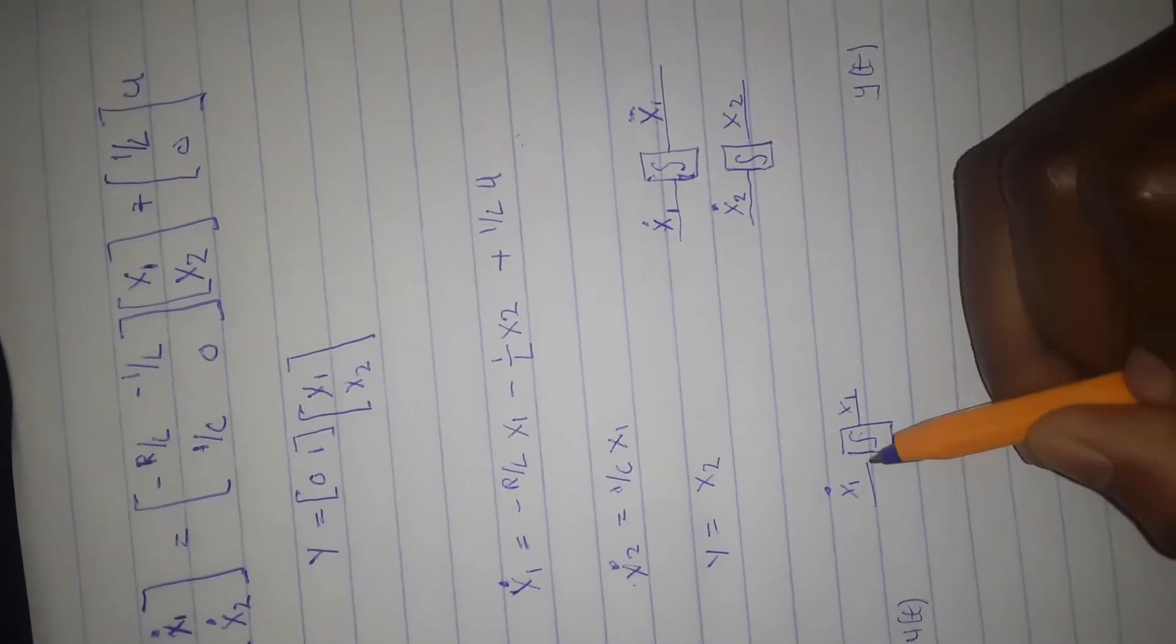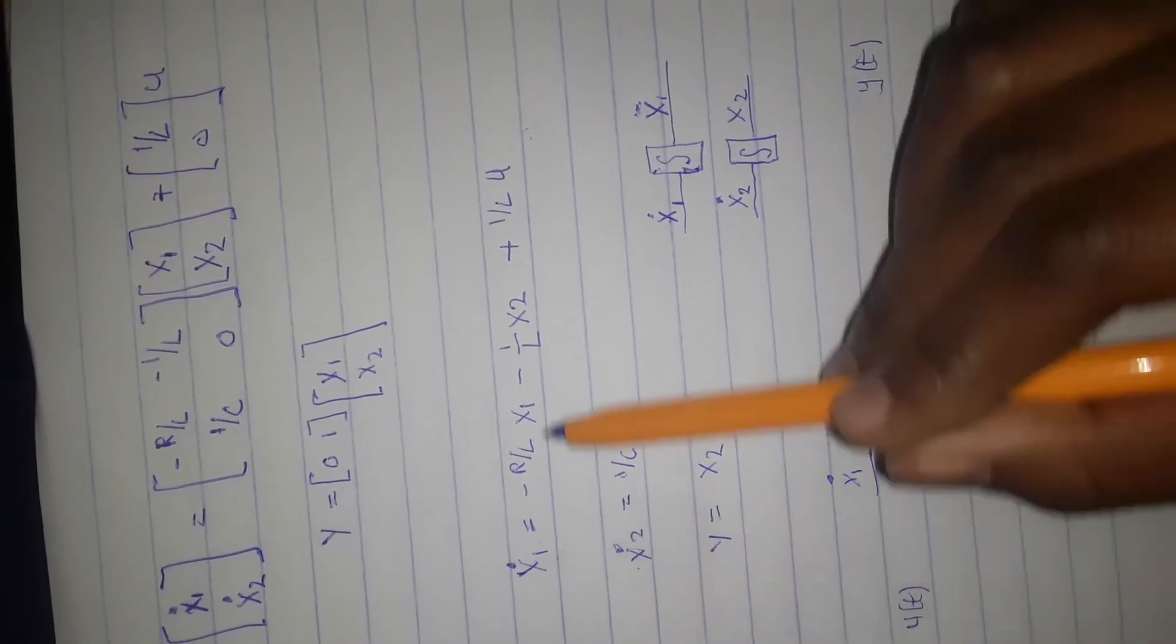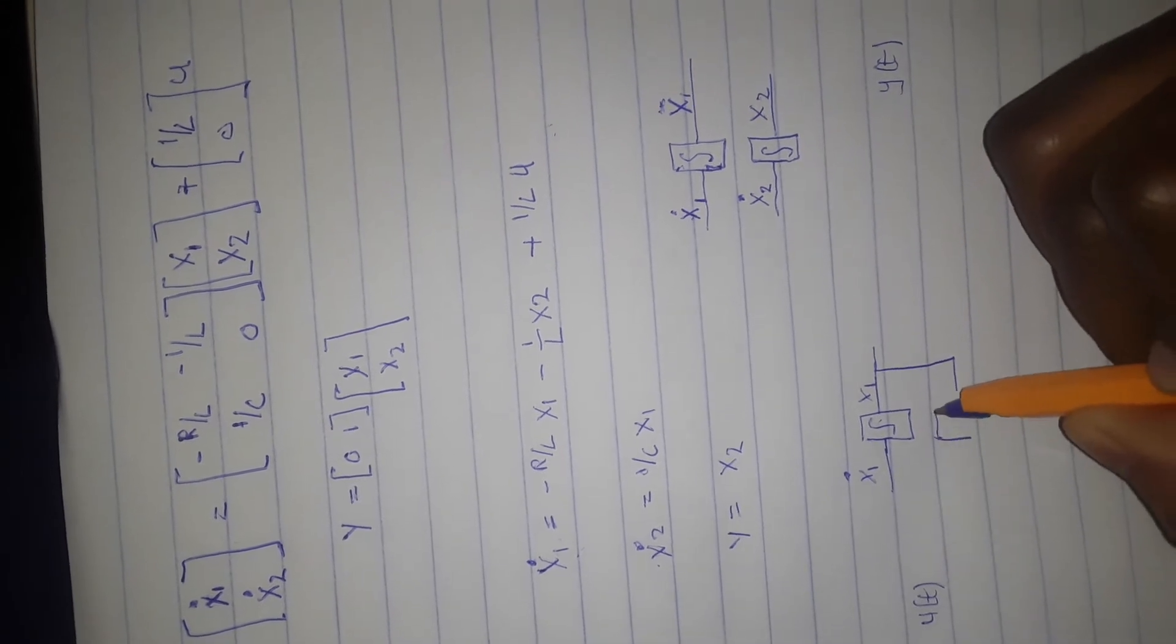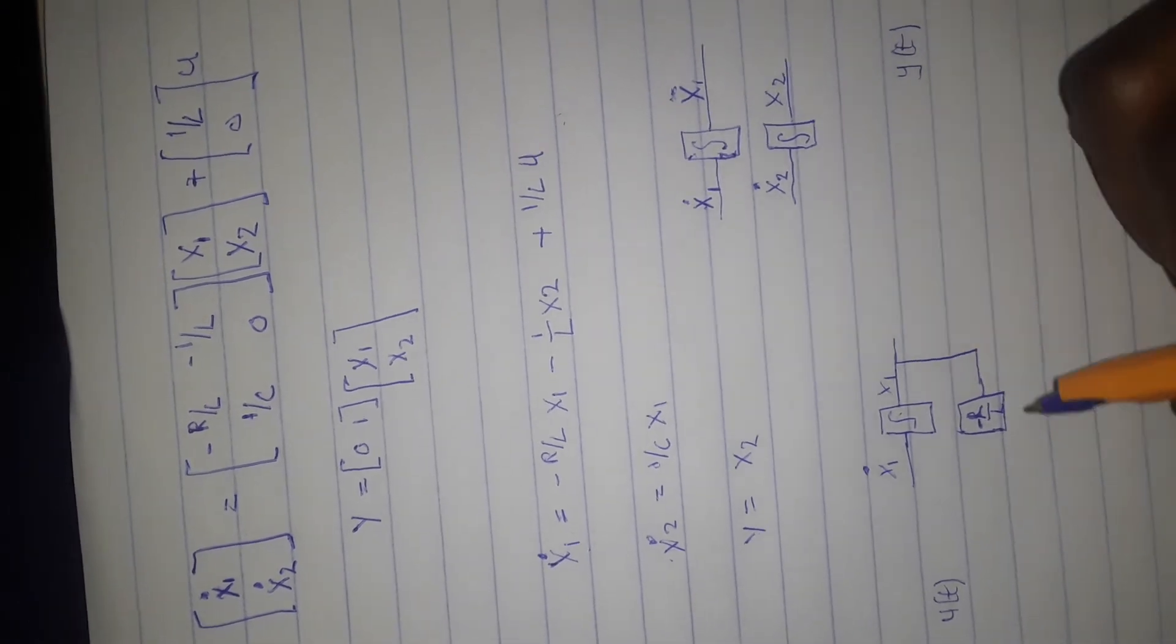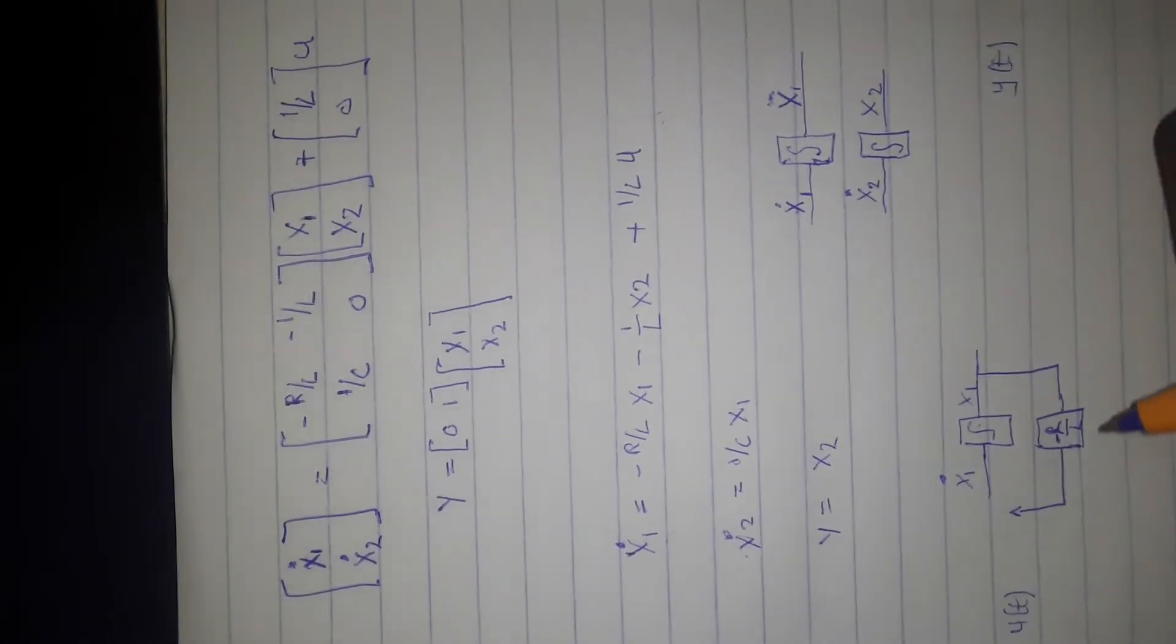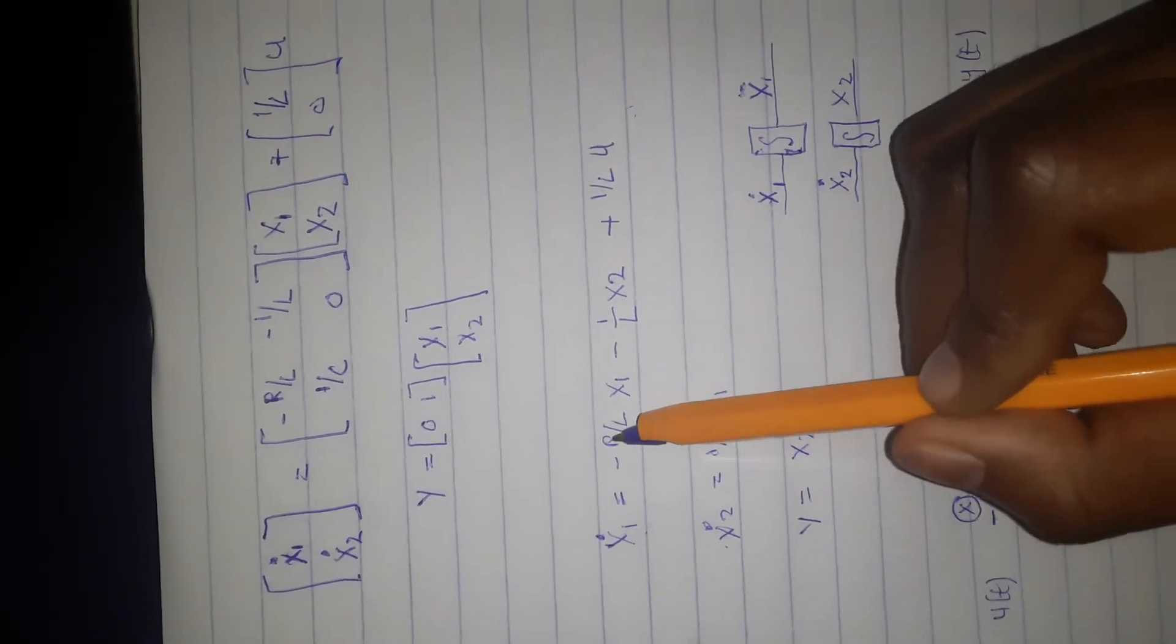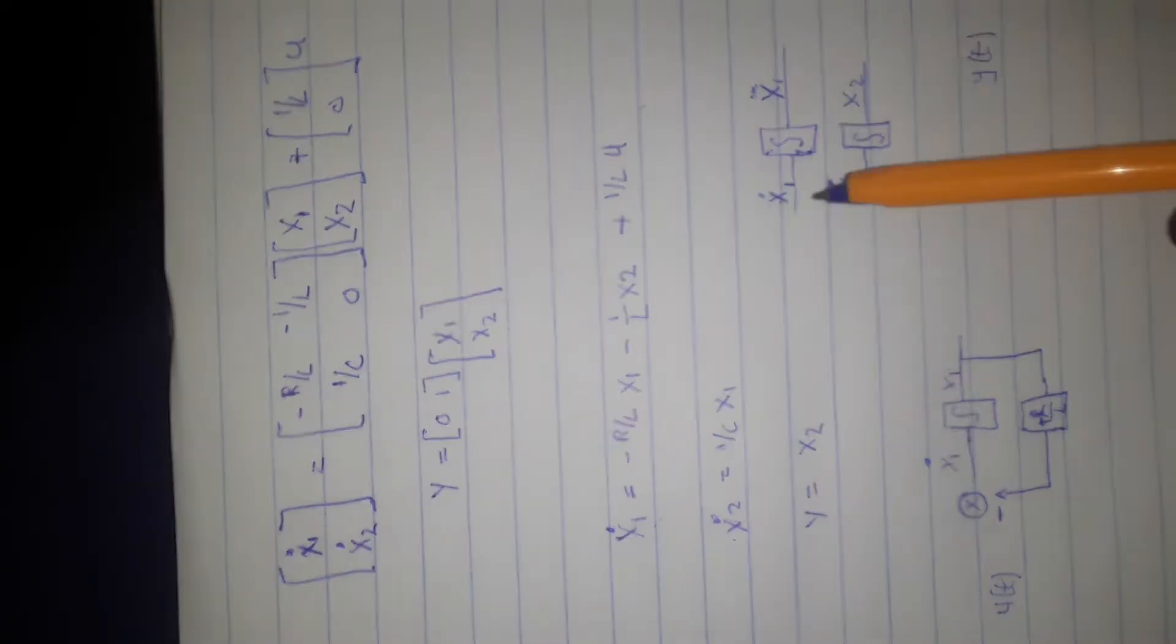When I look at my x1 equation, I have minus r over L x1. So here's my x1. I'm going to take my x1, multiply it with the gain of minus r over L. Actually, it's plus r over L, then you're going to minus it because it's minus r over L x1. So you have this part already.